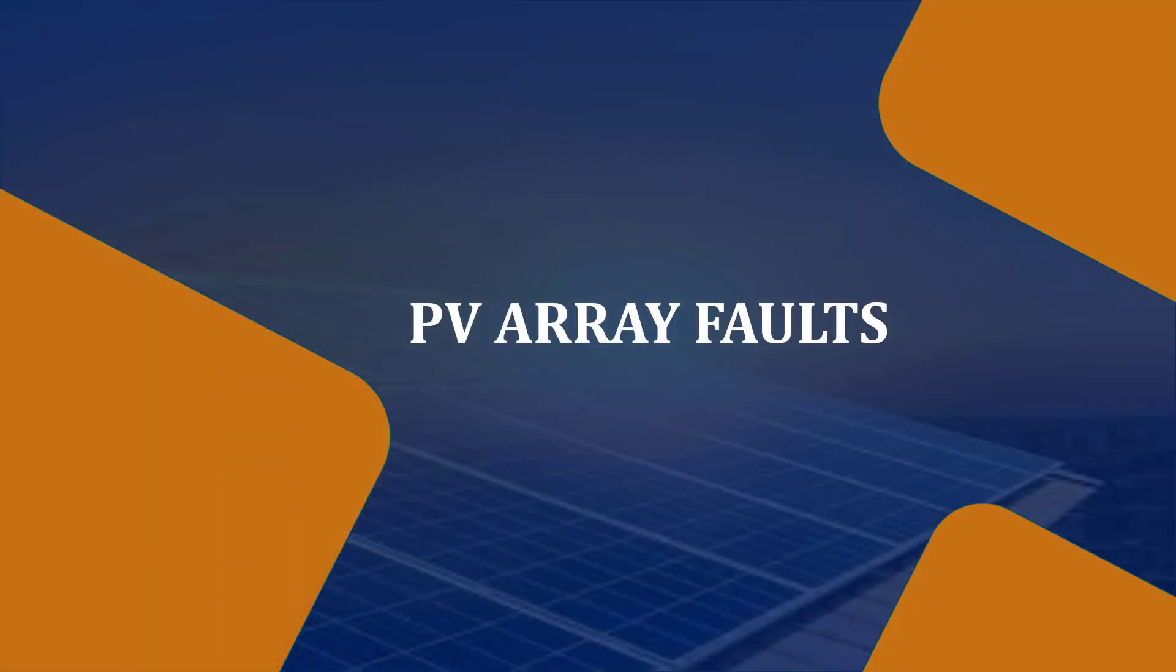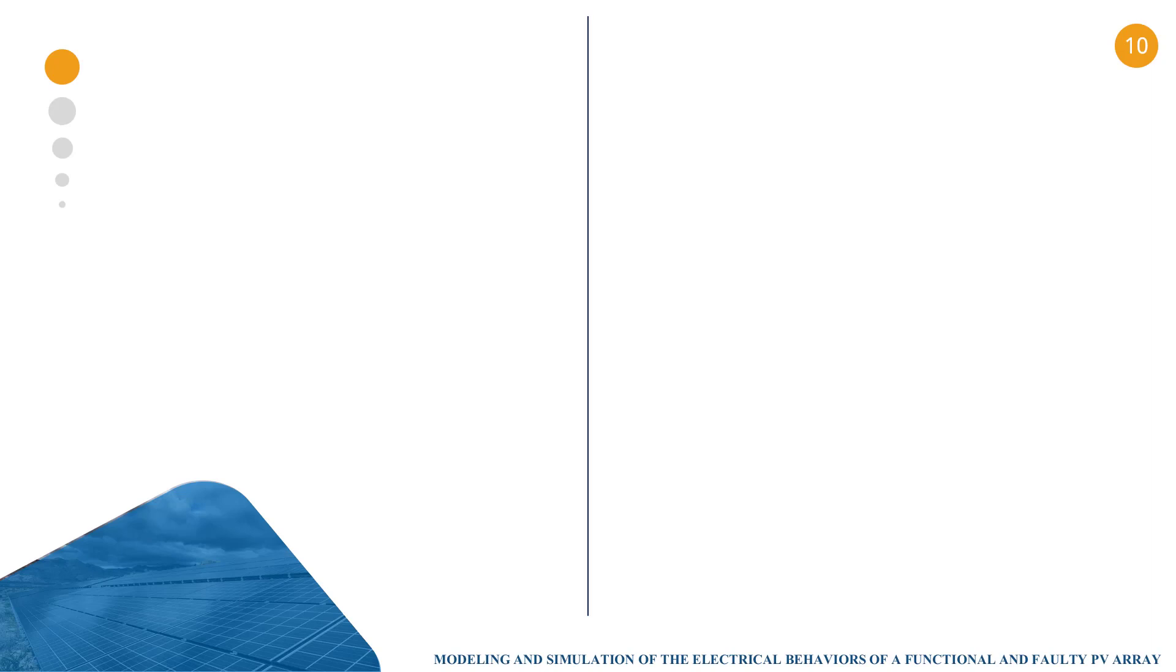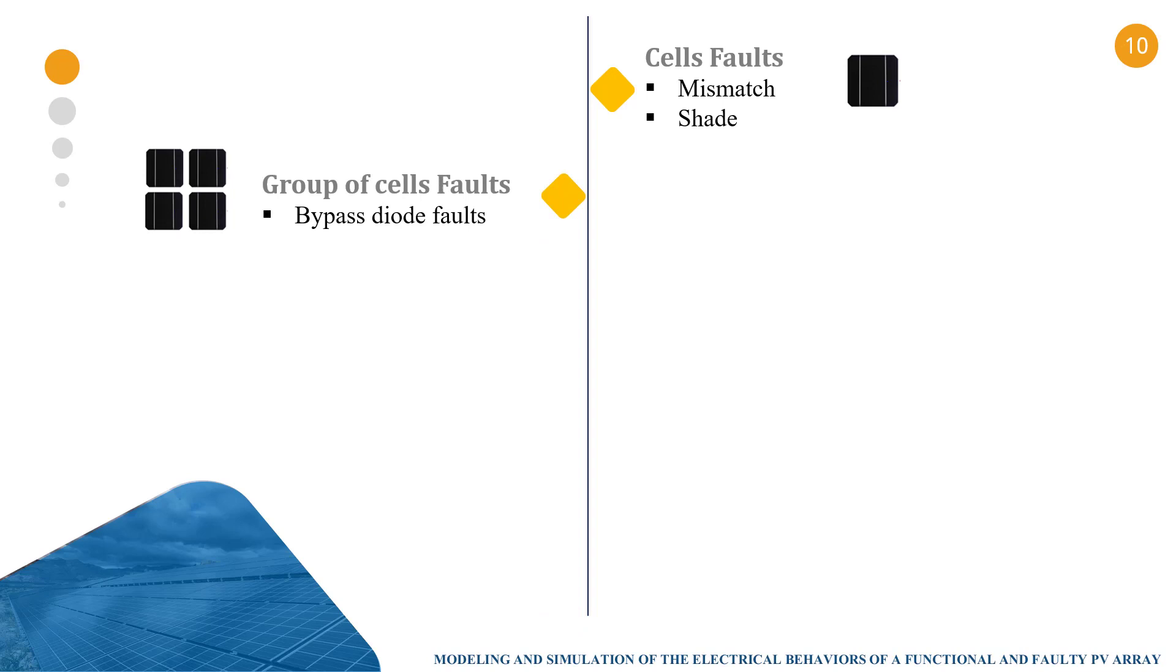Now let's move to a presentation of some PV array faults. PV array faults can be classified according to the stage in which they occur. For example, in the cells, we have the mismatch or shade faults. In a group of cells, we can have bypass diode faults.